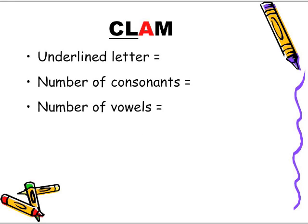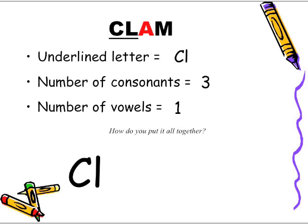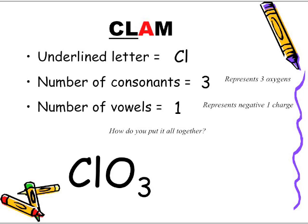Next example — "clam." The underlined letters are C-L. Number of consonants: three. Number of vowels: one. So CL with three oxygens gives ClO3, and one vowel gives a negative one charge. We're making reference to chlorine, but because it's a polyatomic with oxygen present, we call it chlorate.